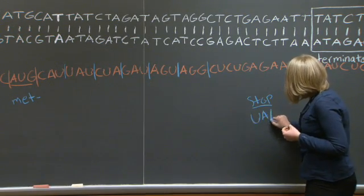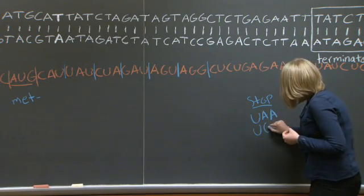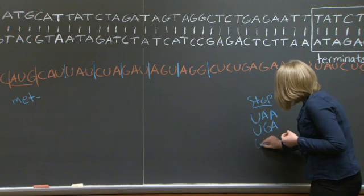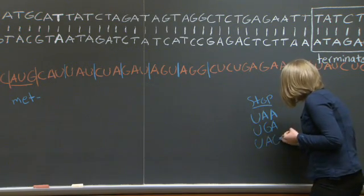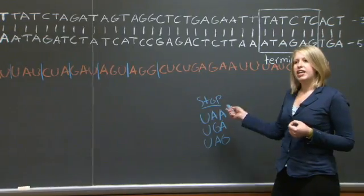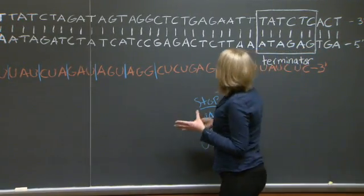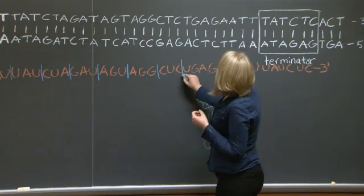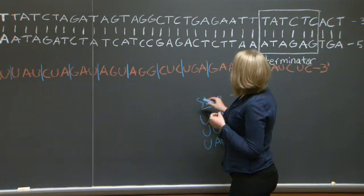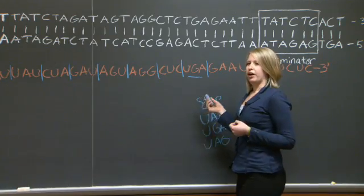These are UAA, UGA, and UAG. So when my ribosome finds any of these three codons in frame, it's going to stop. So I get all the way down here before I hit a stop codon on this transcript.